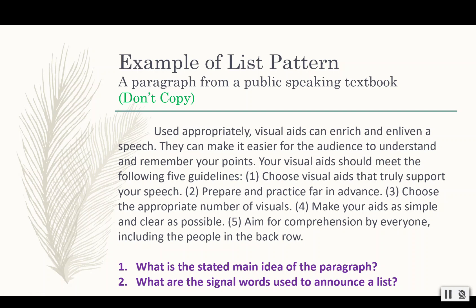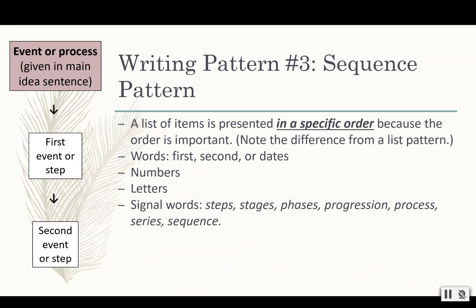That's an example of a list pattern. Remember, with list patterns, the order does not matter. Writing pattern number three is a sequence pattern — the order matters. It's a list of items presented in a specific order because the order is important. Note the difference with the list pattern. With our list pattern, we had the example of a grocery list where it really didn't matter. But a sequence pattern — think of that like a recipe, because you've got to do certain steps first before you get to other steps.